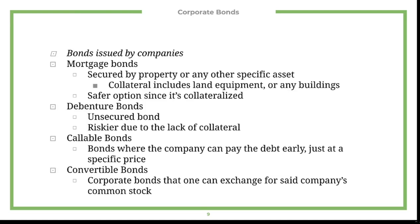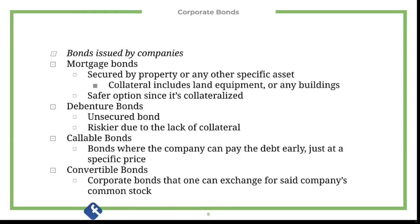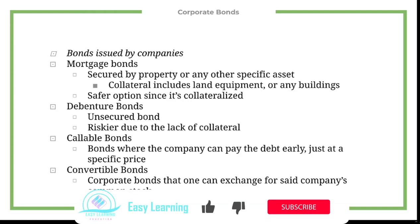Debenture bonds are unsecured and because of that they're riskier. Callable bonds are bonds where the company can pay its debts off early, but they must do so at a specific price. Convertible bonds are bonds that can be exchanged for the company's common stock — so you can convert between bond and stock.